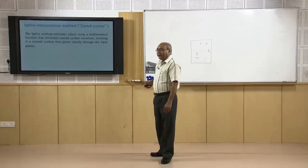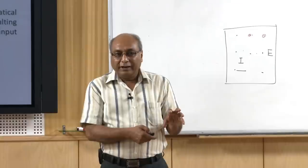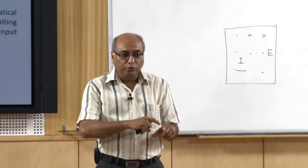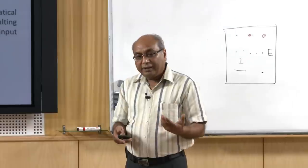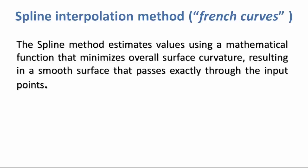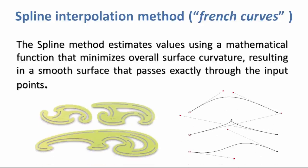The concept of Spline came from mathematics and is associated with the so-called French curves — flexible curves used by architects and draftspeople to draw smooth lines through known points. Similarly, the Spline method estimates values using a mathematical function that minimizes overall surface curvature, resulting in a smooth surface that passes exactly through the input points. Mathematical ways of doing this in GIS are now readily available.